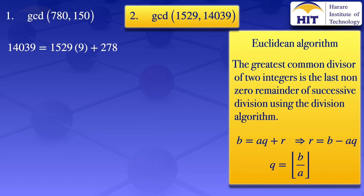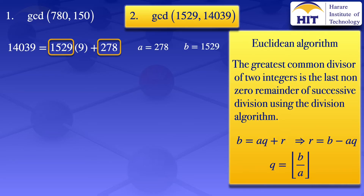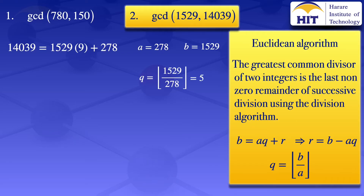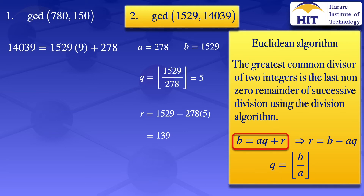We now go on and apply the division algorithm again to the numbers 1529 and 278. The smaller number will be A, so our A is 278 and our B is 1529. Our quotient is the floor value of 1529 divided by 278, which gives us 5. Our remainder is B minus AQ, which gives us 139. Using the division algorithm, we have 1529 equals 278 times 5 plus 139.